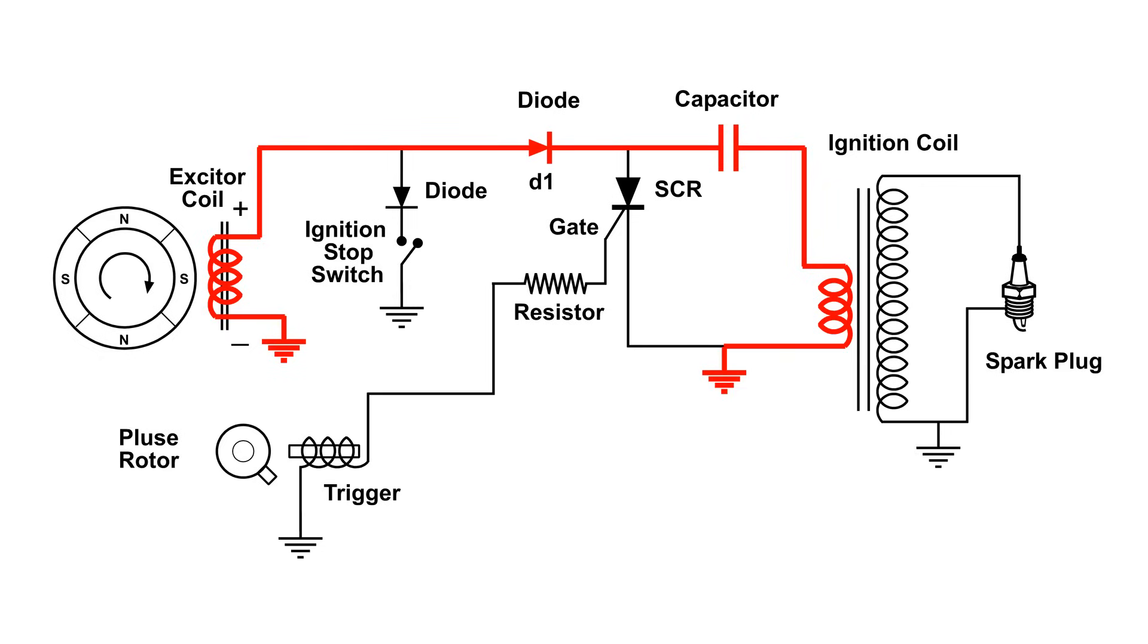Now the capacitor has started charging again. The voltage and current going through the primary of that ignition coil is low enough that it will not produce a spark, but it is enough to start charging the capacitor. I'm going to let this run for a while so you can see the sequence a few times.